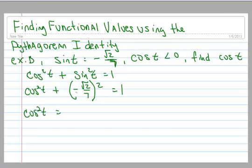So a negative times a negative is a positive, so the negative has disappeared. That's a plus right there. The square root of 2 squared becomes 2, and 7 squared becomes 49.